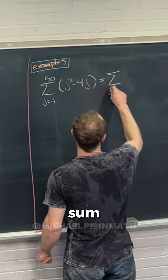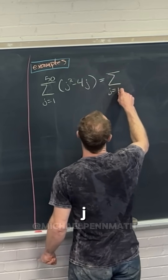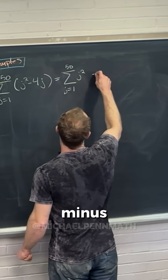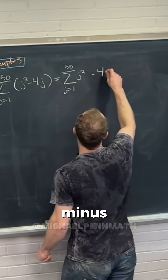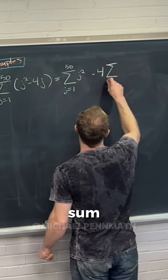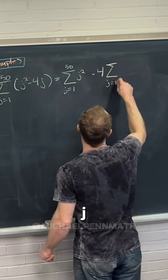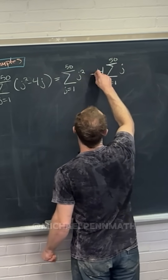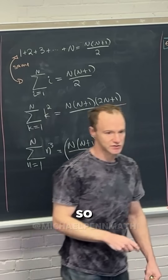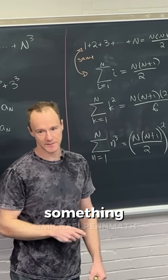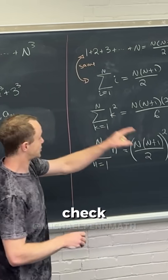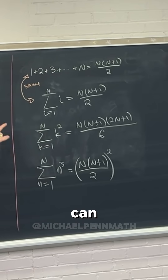This is the same thing as the sum as j goes from 1 to 50 of j squared, minus 4 times the sum as j goes from 1 to 50 of j. It seems like we did something fancy, but really we just reordered and regrouped. At this stage we can apply some of the summation formulas we talked about.